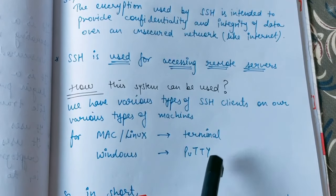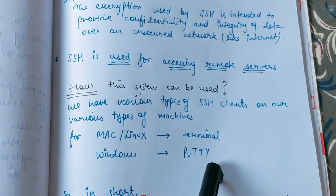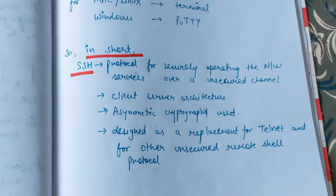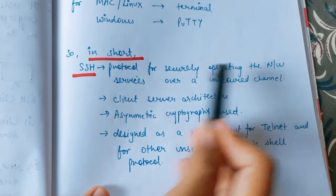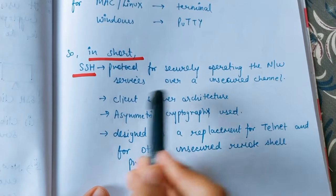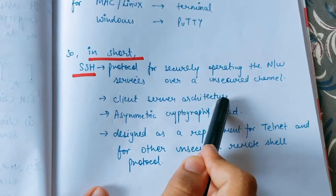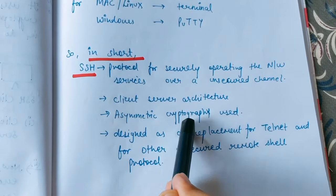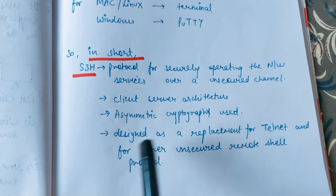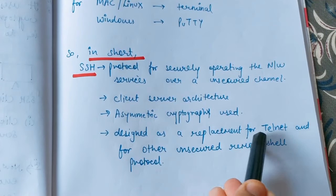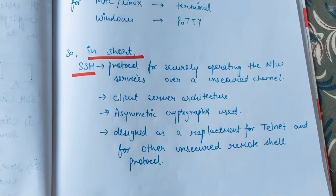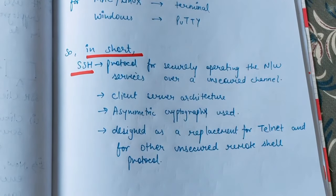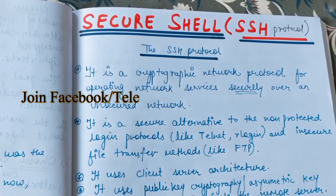Basically, SSH protocol is used for securely operating network services over an unsecured network. It follows client-server architecture and uses asymmetric cryptography — that is the public-private key concept. It is designed as a replacement for Telnet and other unsecured remote shell protocols, providing security over an unsecured network.